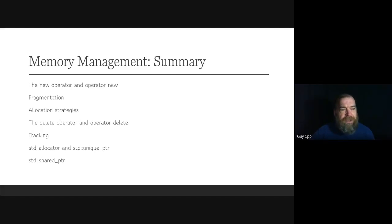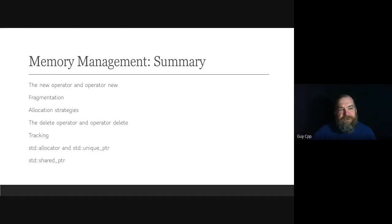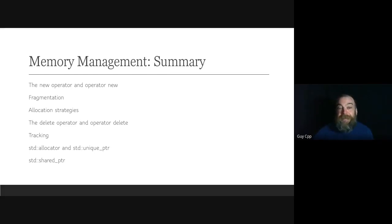Question: does the new allocator have any thread-based optimizations — for example, grouping allocations from a particular thread in a memory region for better cache performance? There is no 'new allocator' per se. I would be surprised if that would make a difference, but it might. There are no thread-based optimizations mandated by the standard, but implementers might try to implement some.